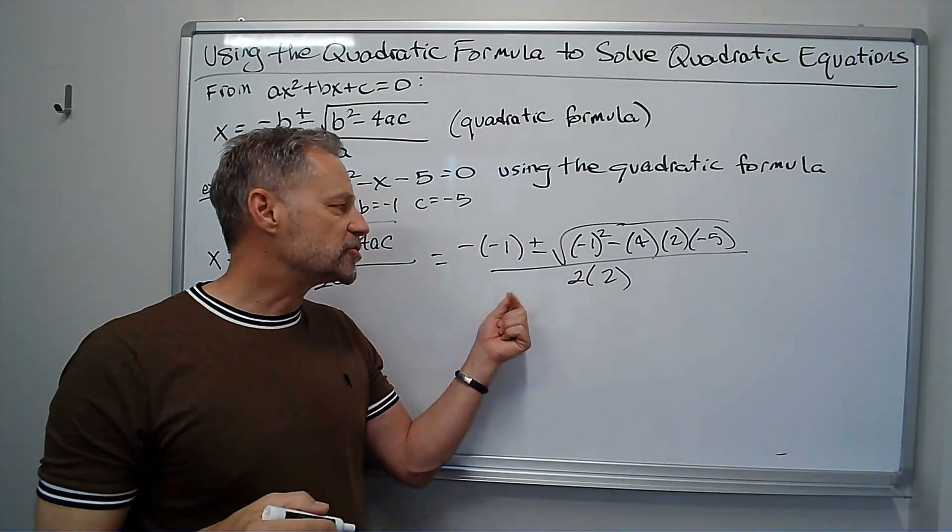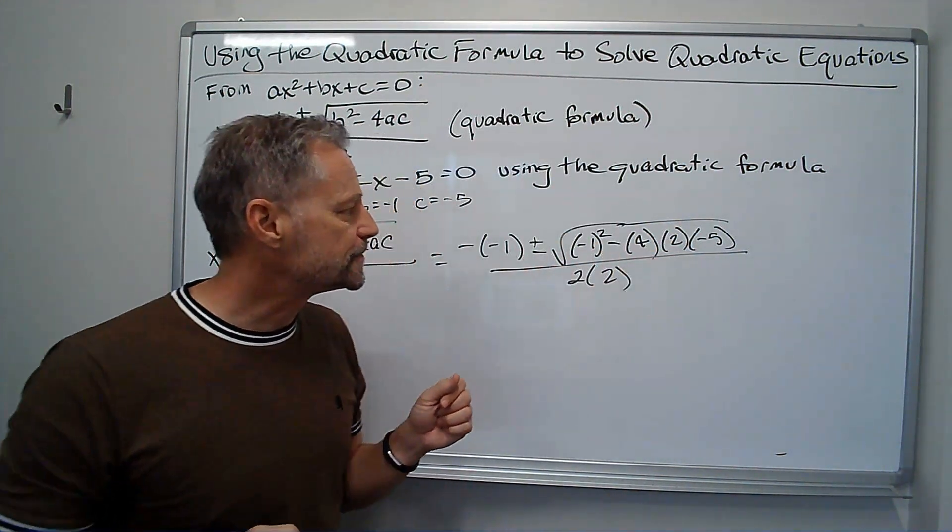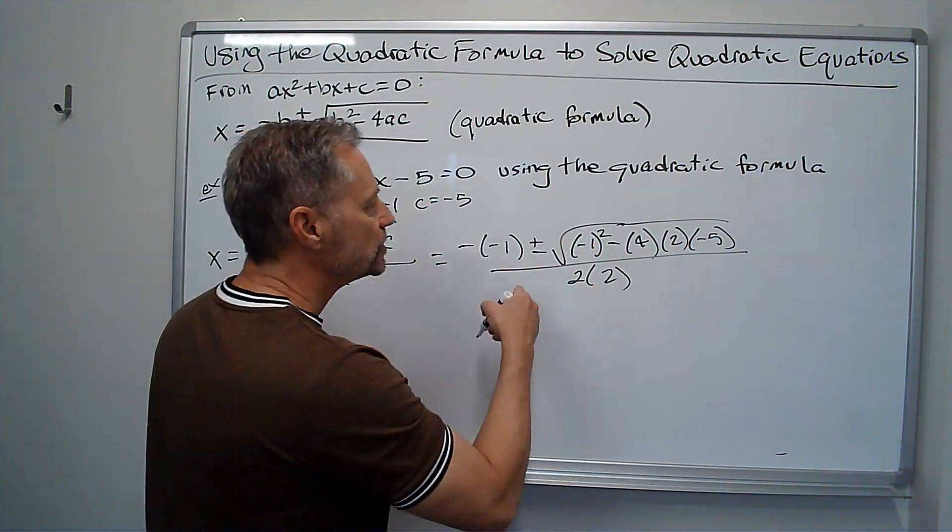Notice we say all over 2a, because the whole thing is over 2a, not just the square root. Okay, so we'll go over here.